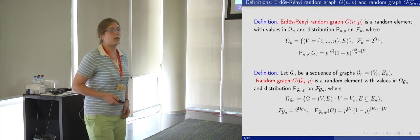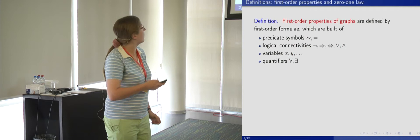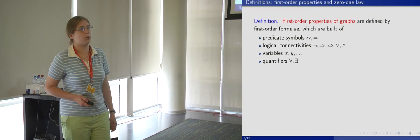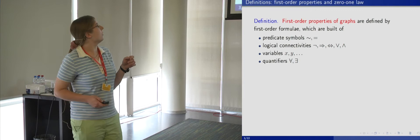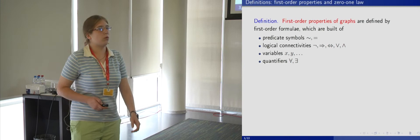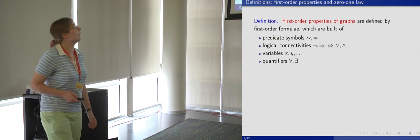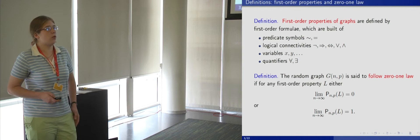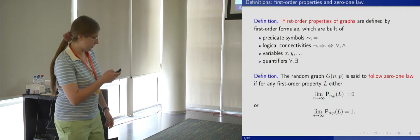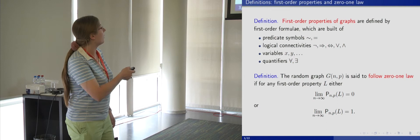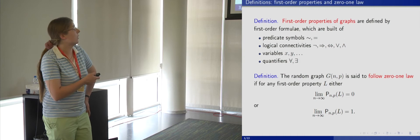Let's define the 0,1 law for random graphs. In order to do this, we need the definition of first-order properties of graphs. They are defined by first-order formulas, which are built of predicate symbols, logical connectives, variables x, y, etc. corresponding to vertices of the graph, and quantifiers 'for all' and 'there exists'. We say that the random graph G(N,P) follows the 0,1 law if for any first-order property L, the probability that this random graph satisfies L tends either to 0 or to 1 as N tends to infinity.